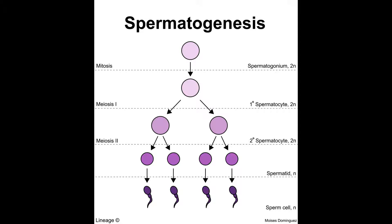Then a primary spermatocyte is made, which is still 2N, and it undergoes meiosis 1. As a result of meiosis 1, we get 2 secondary spermatocytes. Now we need N chromosomes to make gametes, and we now have 4 spermatids. After the spermatids, they will become mature sperm cells which will be ready for fertilization.